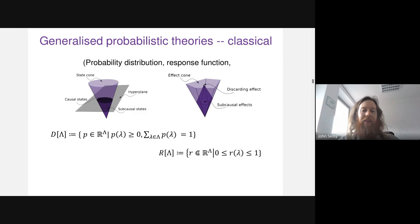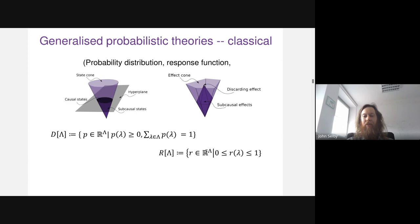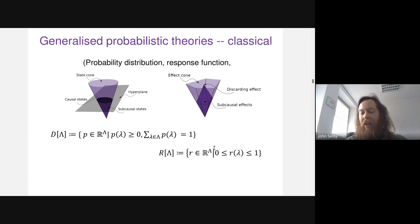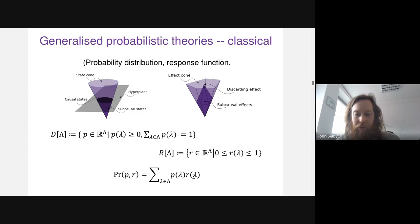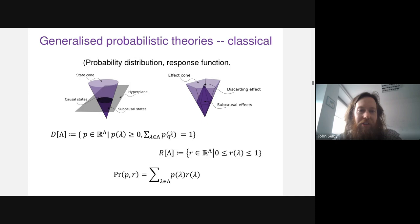The response functions tell us the probability of getting some classical outcome: if the classical system is in state lambda, what's the probability this outcome occurs? The effects live in the vector space of functions from lambda to the reals satisfying a normalization condition for all lambda. To compute the probability of a particular response given a probability distribution over lambda, we just average over the possible values of lambda.